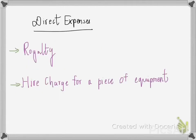Under direct expenses there are royalties and hire charges for a piece of equipment. A royalty is the fee paid to the inventor of the product. Since it is paid by the business to the inventor, it is an expense and is directly linked with the product, so it comes under direct expenses. A hire charge means paying an installment, which is also an expense for the business.